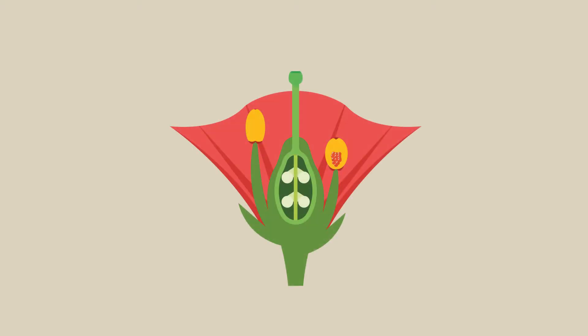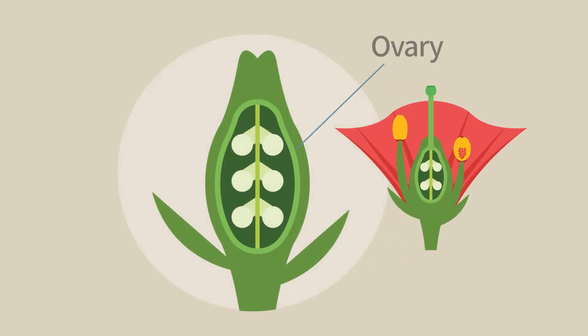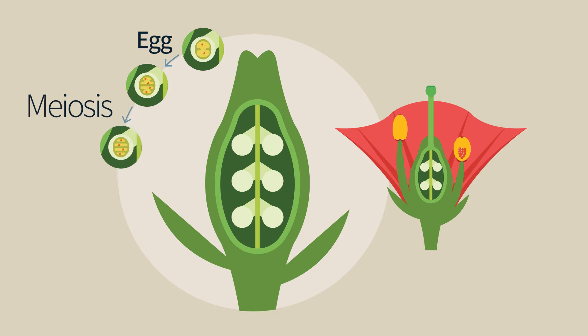Let us focus now on flowers. We will start with the female ovule. The diploid cell that will give rise to the egg undergoes meiosis that results in four haploid cells.